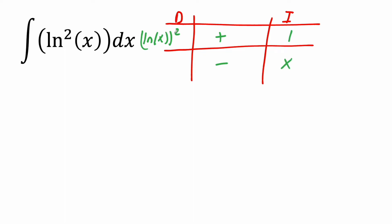The derivative of ln²(x) will bring the 2 to the front, giving us 2·ln(x), but then we take the derivative of the inside piece. The derivative of ln(x) is 1/x, so we divide by x. Obviously if I continue taking the derivative this is never going to stop.